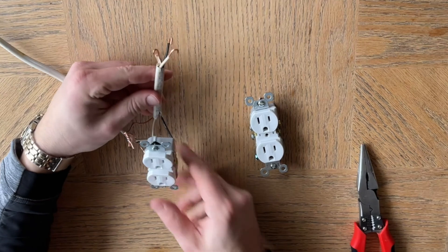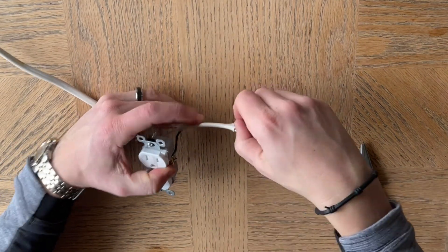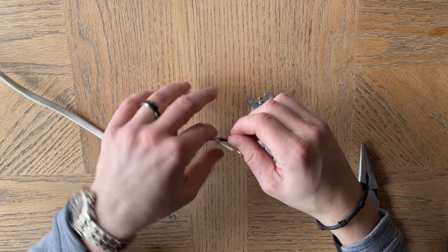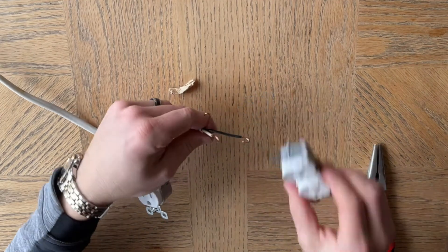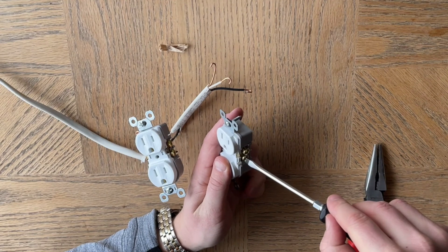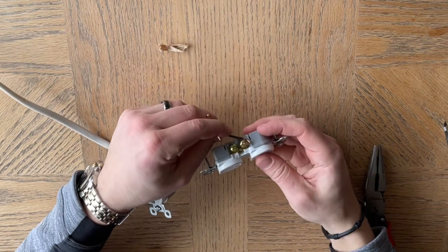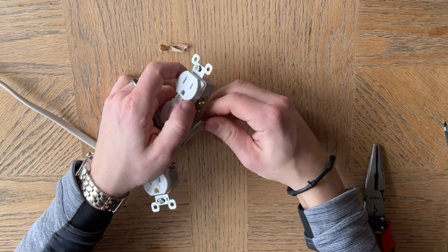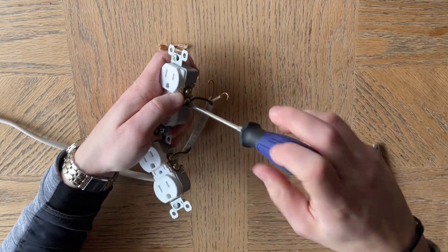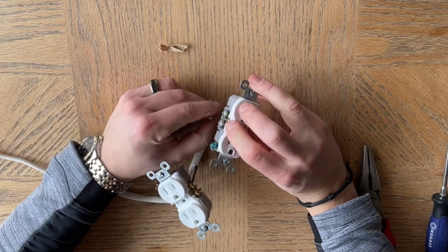All right, so that would be your first outlet. Then this is going to go to the second outlet in the series and it's just like wiring up any other outlet at this point. So obviously you'll have the black one. I like to again put them on the bottom. The black one would go on the brass terminal here. And then the white on the silver.